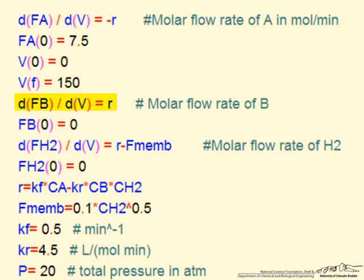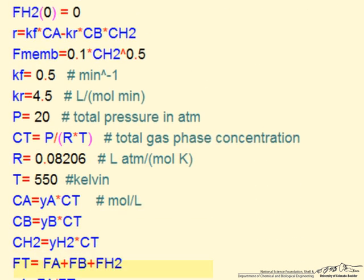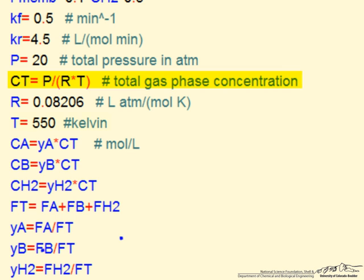In the Polymath program: the flow rate of B has a stoichiometric coefficient of positive 1, and the flow rate of hydrogen also includes the membrane permeation term. The rate is written in terms of rate constants and concentrations; the flux through the membrane uses concentration of hydrogen to the 0.5 power. Total concentration from the ideal gas law is P over RT. Concentrations are obtained from mole fractions times total concentration, and mole fractions come from each component's flow rate divided by the total flow rate.